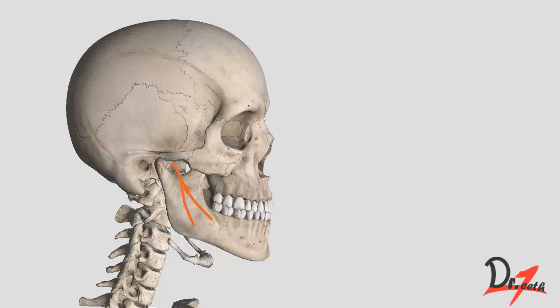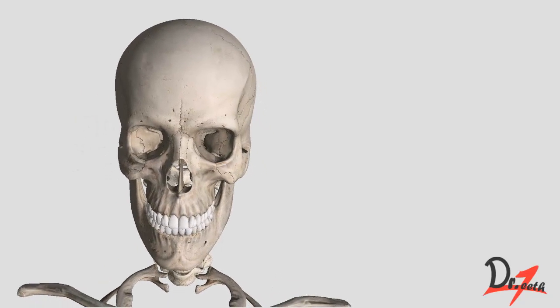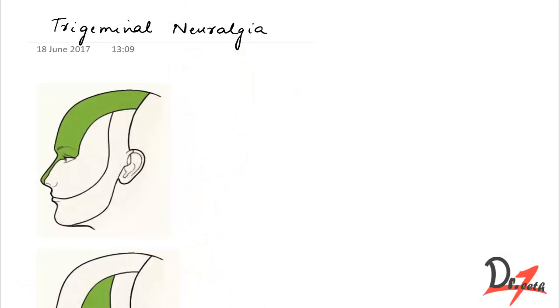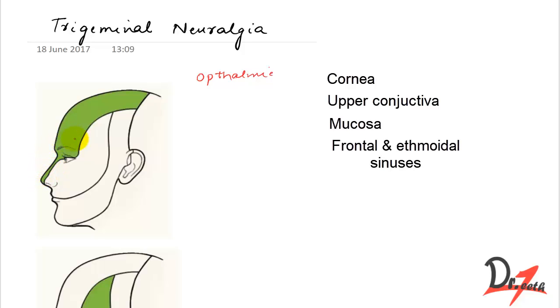Now let us see which areas are supplied by each of these nerves. The ophthalmic nerve supplies the cornea, upper conjunctiva, mucosa of the anterior superior nasal cavity, frontal and ethmoidal sinuses, skin and dorsum of the external nose, the superior eyelid, forehead, and the scalp.